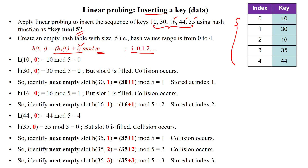We start with probe sequence 0. For k = 10, we calculate 10 mod 5, which is 0. So we insert the value 10 at index 0.